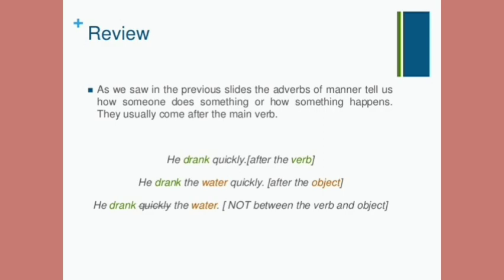Those are some exercises for you. Review: adverbs of manner tell us how someone does something or how something happens. They usually come after the main verb — for example, 'he drank quickly,' or after the object: 'he drank the water quickly.' You cannot put an adverb of manner between the verb and the object — for example, 'he drank quickly the water' is incorrect.